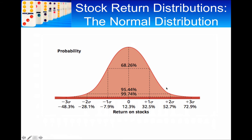That number is 2.33. So 2.33 standard deviations from the mean contain 98% of all observations, meaning 1% in the downside tail and 1% in the upside tail. Our key number for a 1% VAR is 2.33.